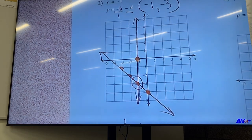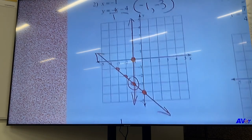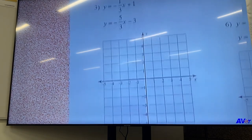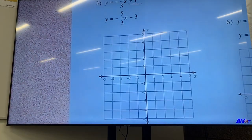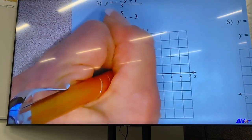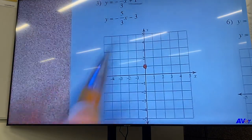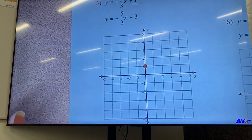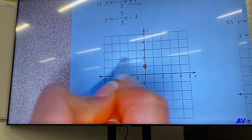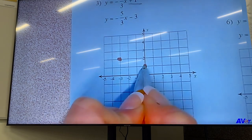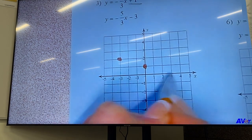Problem number three looks like this. So we've got plus one is our y intercept, negative one third slope. So we go up one over one, two, three. I'm going to do it the opposite way also. Down one over one, two, three.